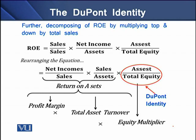The third expression is assets over total equity. In the DuPont model, we have three expressions: net income over sales, which is the profit margin; total assets turnover; and third, the equity multiplier. The combination of the first two — profit margin and total assets turnover — gives us return on assets, and they have a direct relationship with it.